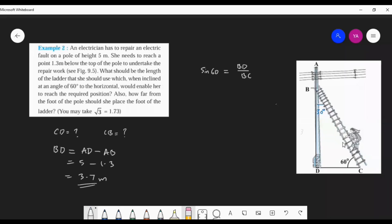Root 3 by 2 is equal to BD by BC. BD we know, we have written here 3.7 meter. So 3.7 meter divided by BC. BC we don't know, simply write BC. In the next step, you can write BC. Yes, BC you move left, and 3.7 into 2 by root 3 will come.